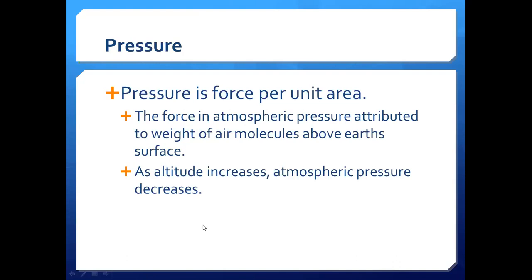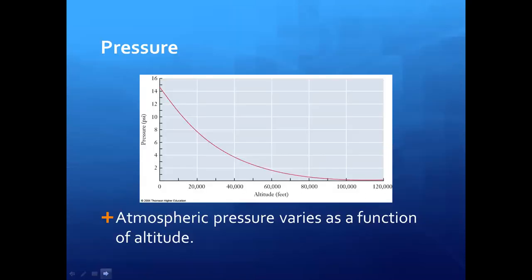If the pressure inside the aircraft were much greater than outside at high altitude, the plane would tend to burst. Conversely, if pressure outside were greater than inside, the aircraft would be compressed — like crushing a soft drink can. Atmospheric pressure specifically varies as a function of altitude; as altitude increases, pressure decreases.